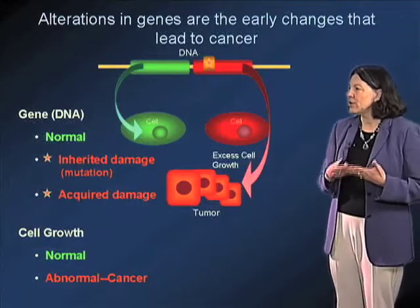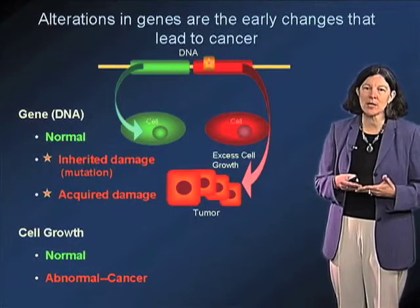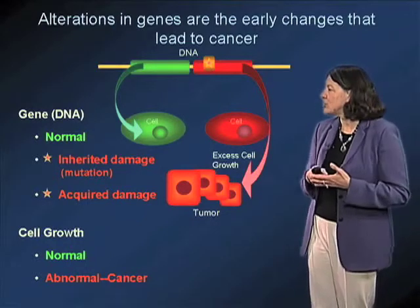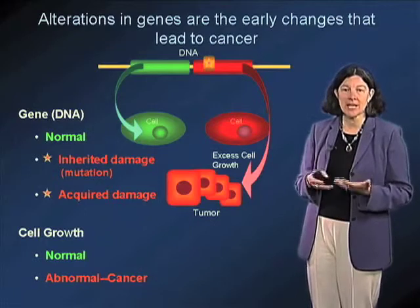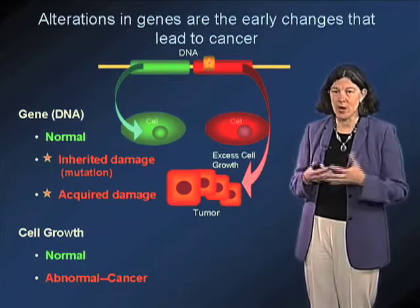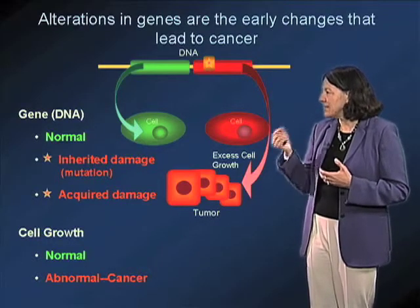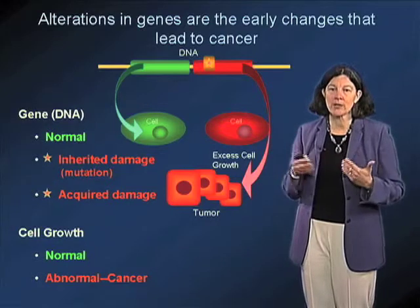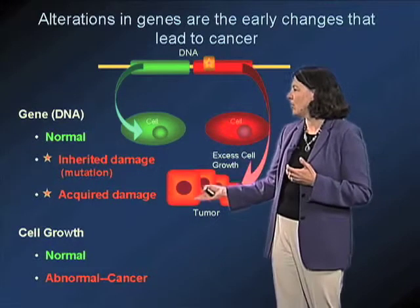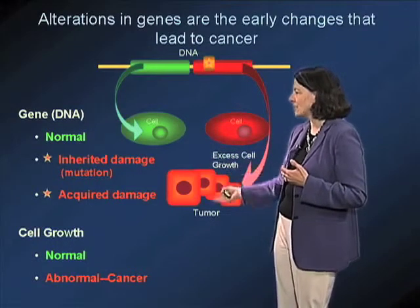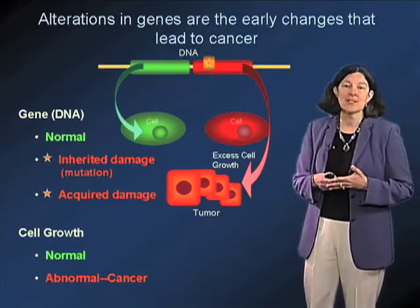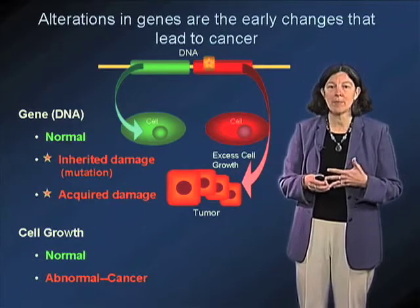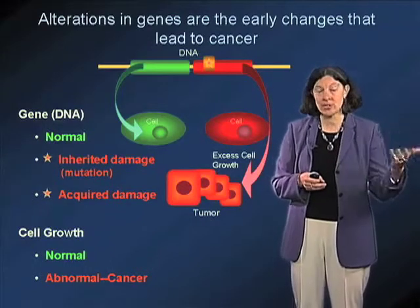We now appreciate that it is alteration in genes — the genetic material — that is responsible for the early changes that lead to cancer. Normal genetic material in a healthy individual leads to control of cell growth, cell death, and all the behaviors of cells described previously. It is lesions in the DNA, mutations in those genes, that alter important regulatory pathways and lead to excessive cell growth or inadequate cell death, and ultimately tumor. These genetic changes can be inherited and passed from parent to child, or they can be acquired over time by exposure to chemical carcinogens, too much sunlight, and so on.